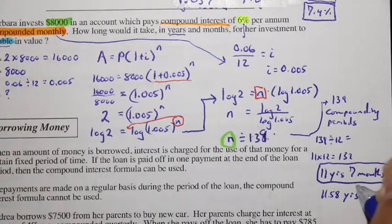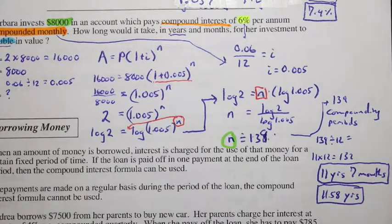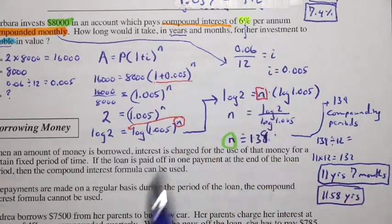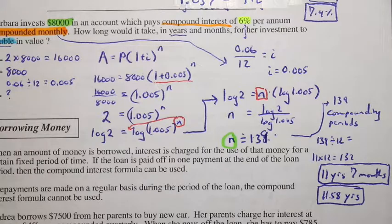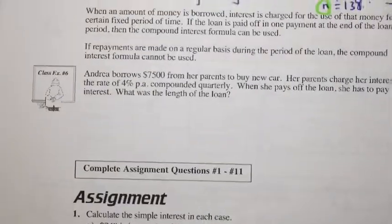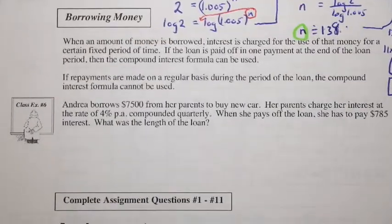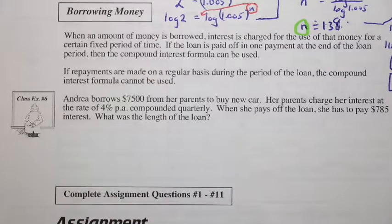11.58 years for the number of years for her investment to double in value. So let's talk about borrowing money here. Now, borrowing money is, in a way, the same thing as investing money.